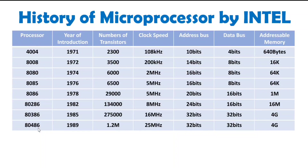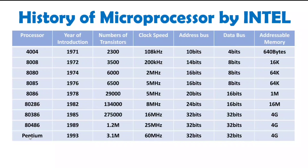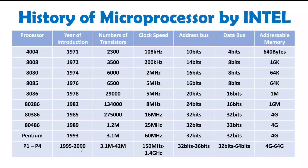After 80486, the Pentium processor was introduced, and with Pentium, Intel changed the world. After Pentium, there was P1, P2, P3, and P4 up to 2000. The number of transistors kept increasing along with clock speed and computational complexity. With P4, there were 36 bits of address and 64 bits of data bus, allowing 64GB of memory to be interfaced, and the clock speed was up to 1.4 gigahertz.